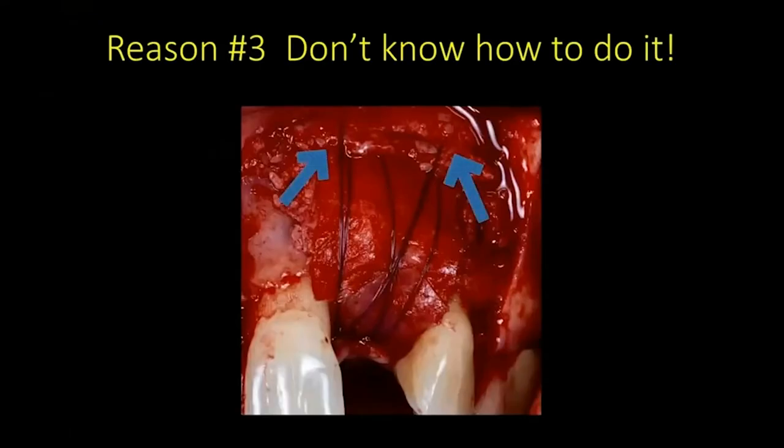Reason number two why people don't socket graft: they don't know what graft to use. There are so many companies with regenerative products — FDBA, DFDBA, TCP, ABM, EMD — it's very confusing unless you were a periodontal or oral surgery resident. My job here is to try to simplify everything. There are literally dozens of different products for socket grafting, but it does not need to be that difficult. Today I want to take the stress off of you and just show you what I use.